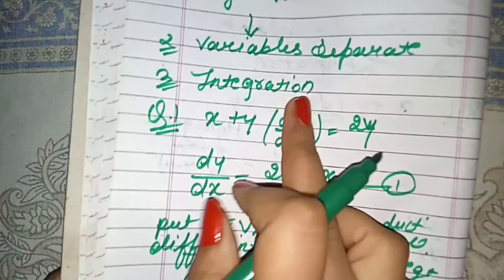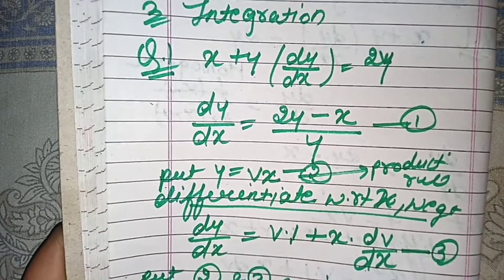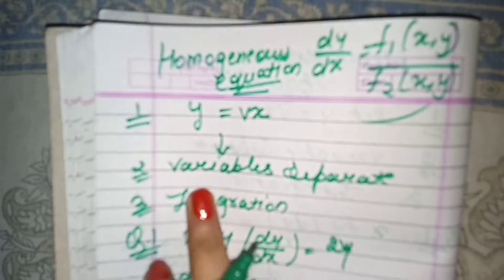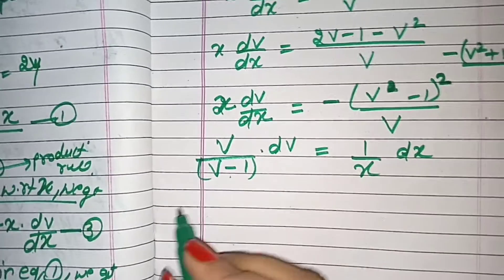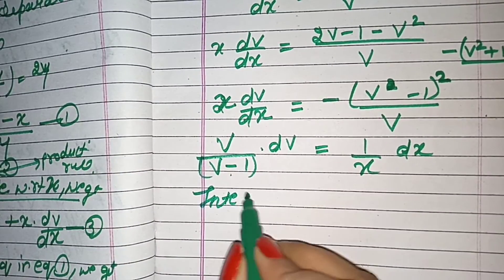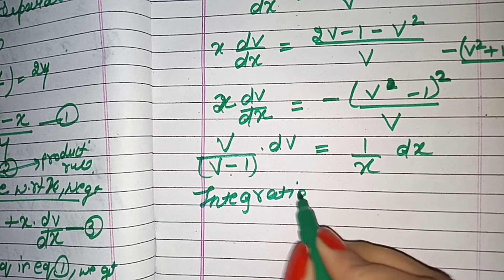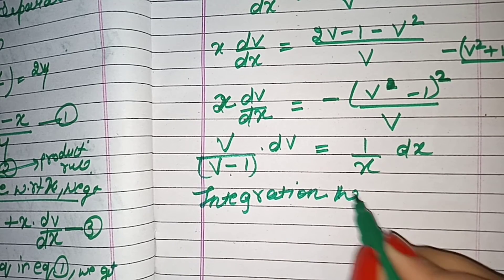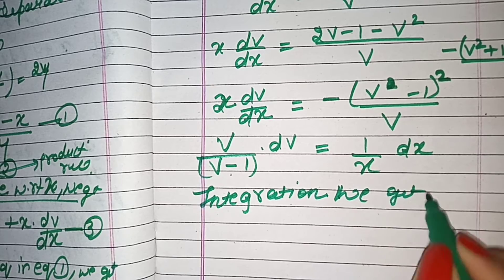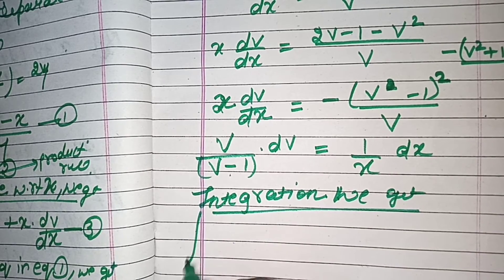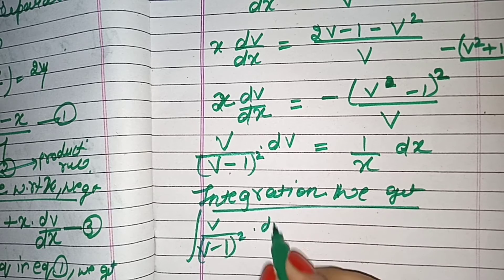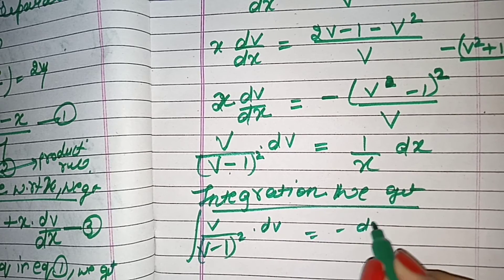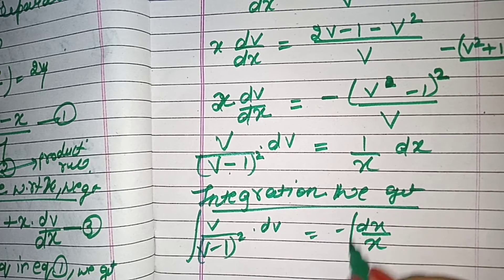Now, if our variables are separated, we will do integration. In the first step we had y equal to vx and differentiated; in the second step we separated variables. Now the third step is integration. We now clearly have the homogeneous equation solved in 3 steps.